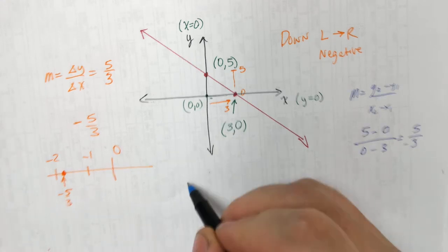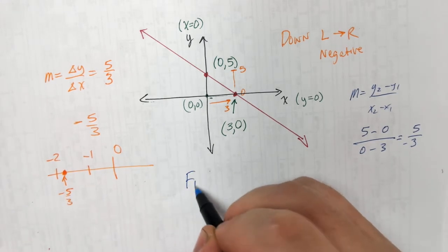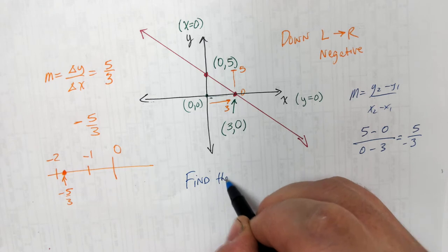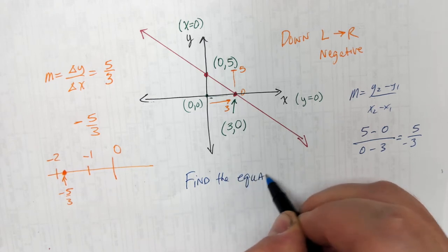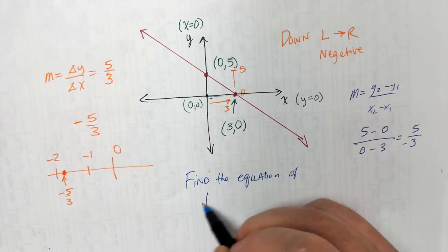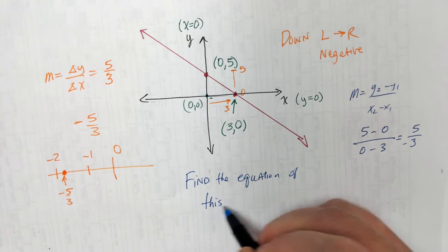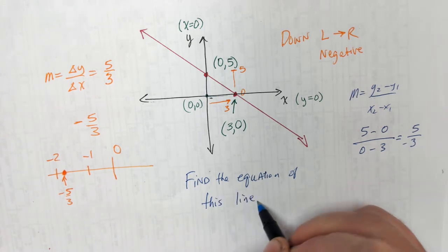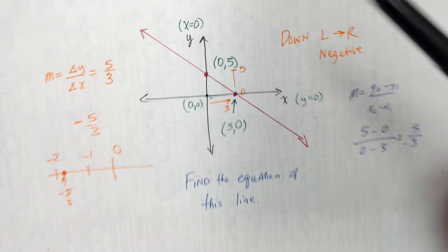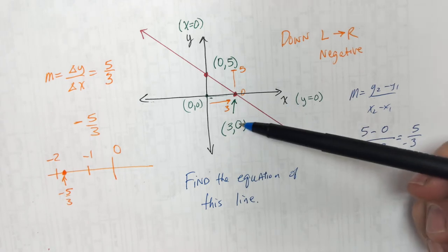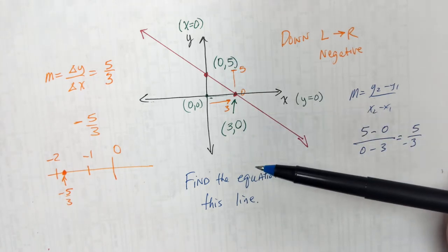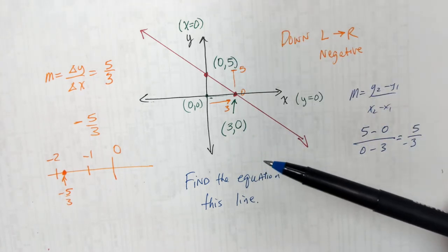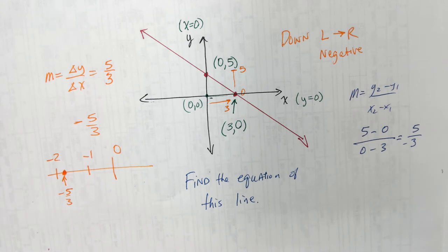We're going to find the equation of this line. The purpose of the whole thing is not just the equation — I wanted to talk about how intercepts have zeros specifically, and about our slope formula. I'm trying to cover a bunch of stuff with one example.